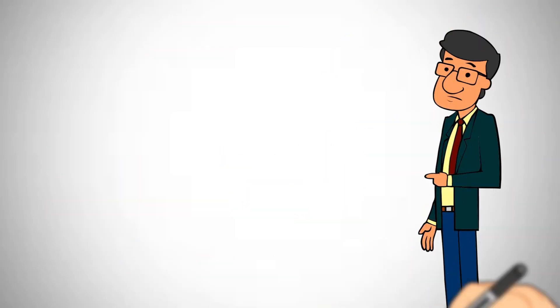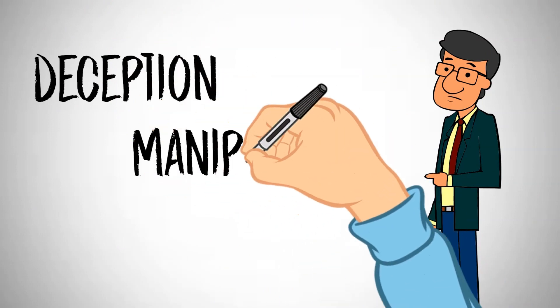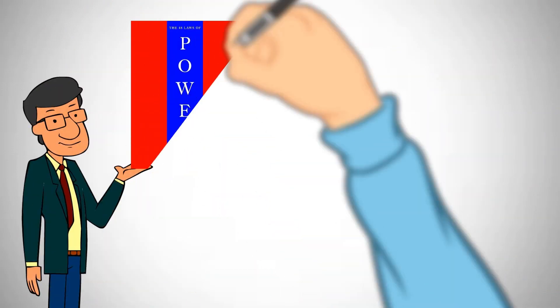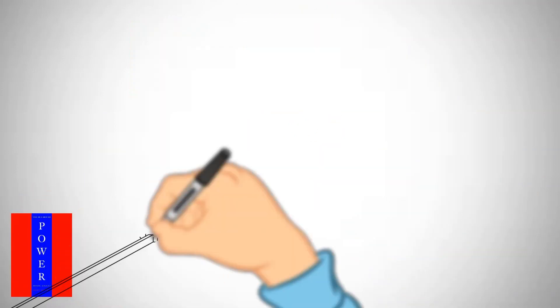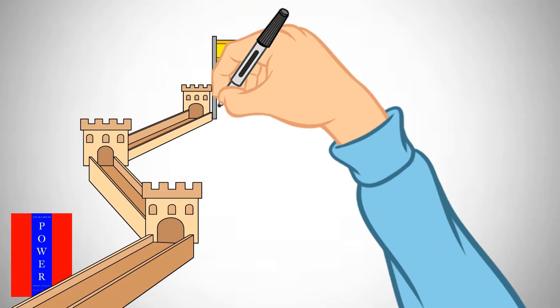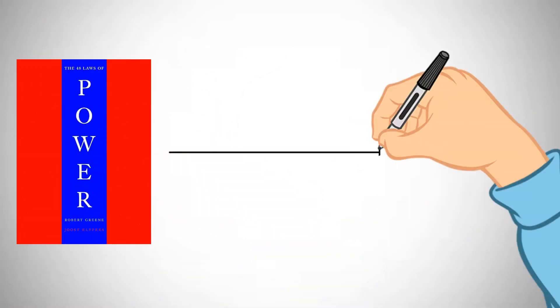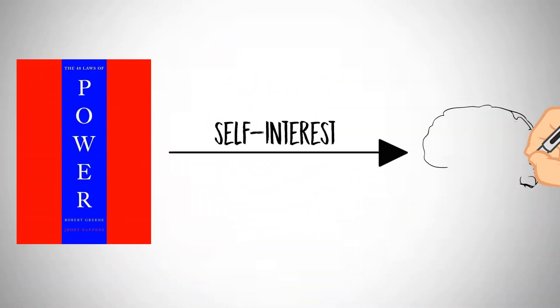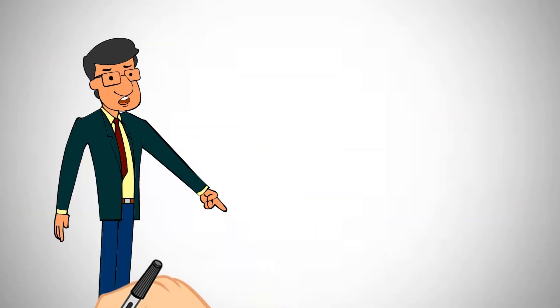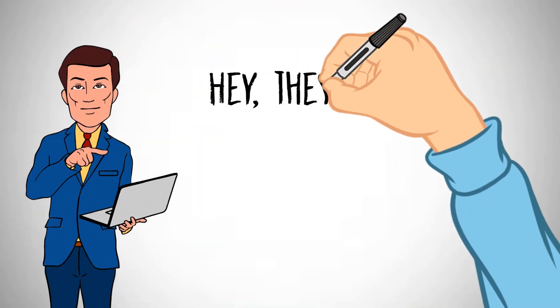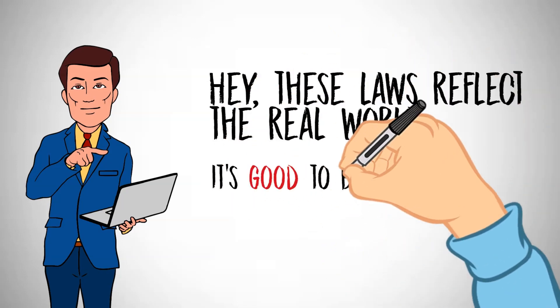The book lays out these 48 laws for gaining and holding on to power, and some of them suggest using tactics that many folks find pretty shady—think deception, manipulation, and even violence in some cases. Critics argue that the book kind of glorifies these tactics, making them seem like a smart way to get ahead, and that's where the ethical red flags pop up. The advice it offers can be seen as promoting a mindset that's all about self-interest, regardless of the impact on others.